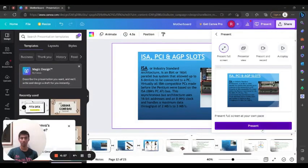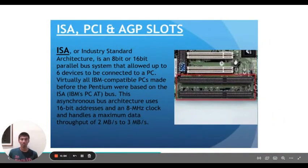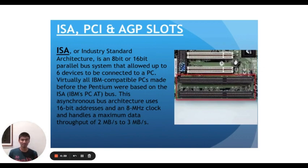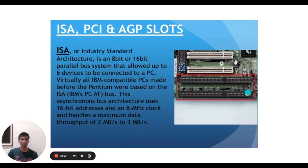I am Ramanuj Pajaj and now I am going to show you what slots are. There are mainly three different types of slots. The first one is ISA, also known as Industry Standard Architecture, which is made up of an 8-bit or 16-bit parallel bus system that allows up to 6 devices to connect to your PC. Virtually all IBM compatible PCs made before the Pentium were based on the ISA bus. This asynchronous bus architecture uses 16-bit addresses and an 8 MHz clock, handling maximum data speeds of 2 Mbps to 3 Mbps.